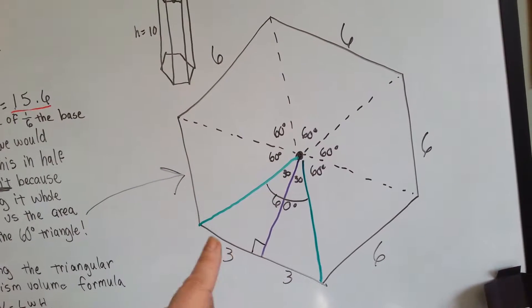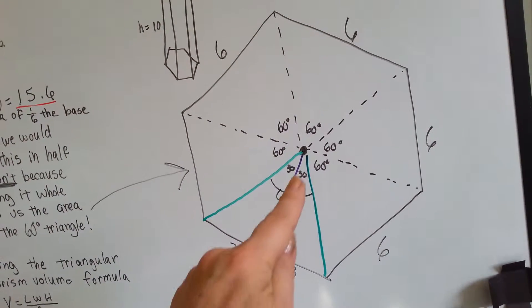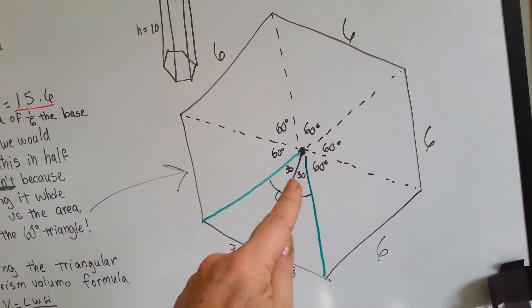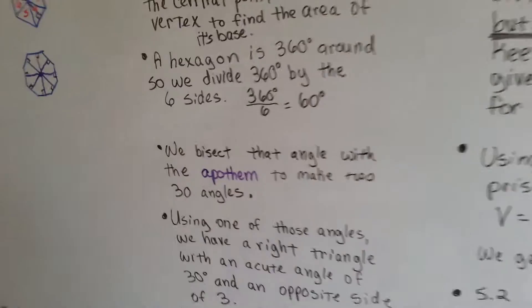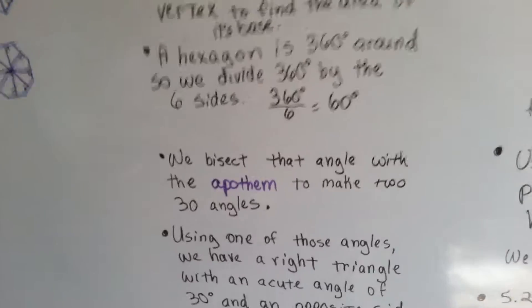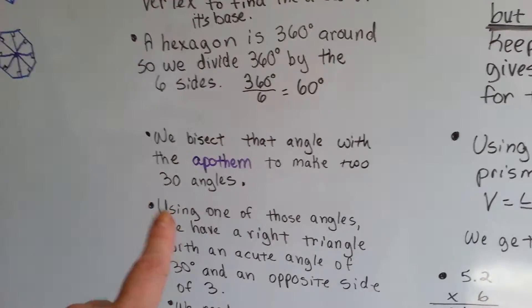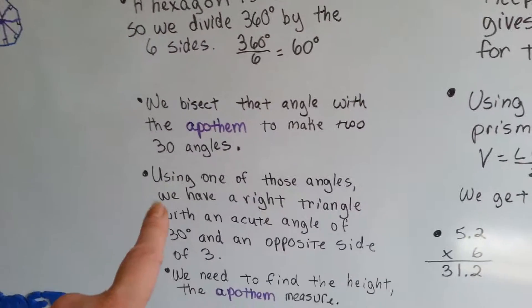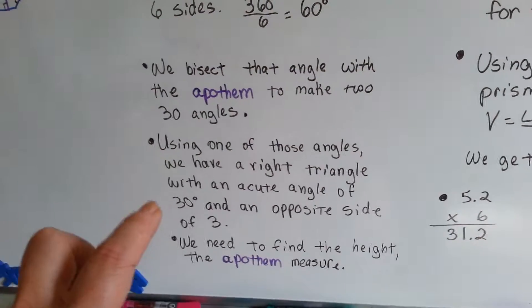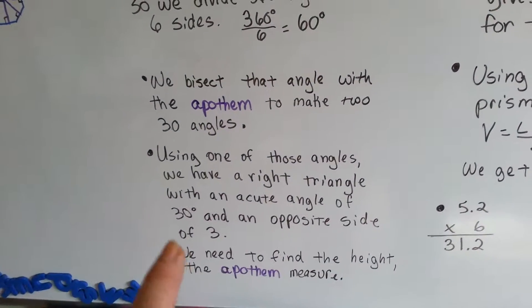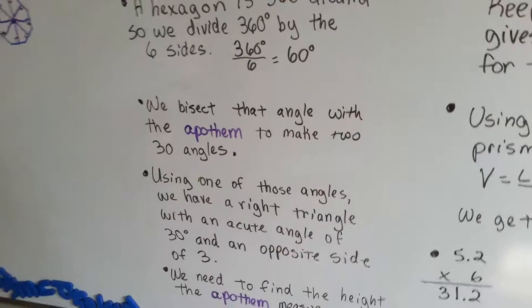You see an opposite side of three, an unknown adjacent, and an acute angle. So now you know where I'm going. We bisect that angle with the apothem to make two 30 degree angles. Using one of those angles, we have a right triangle with an acute angle of 30 degrees and an opposite side of three. We need to find the height of the apothem.